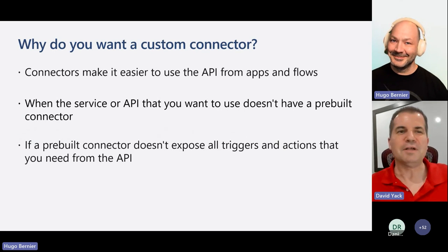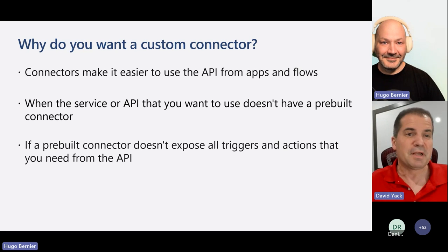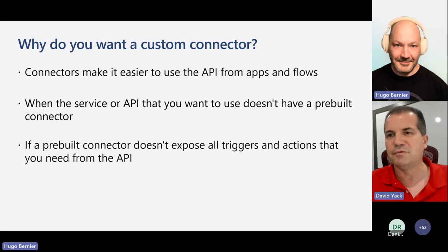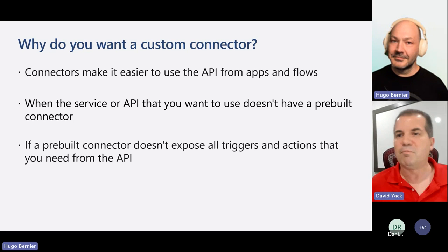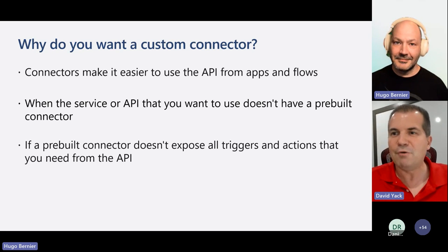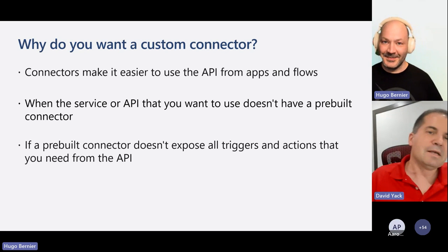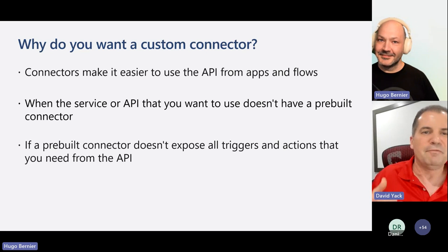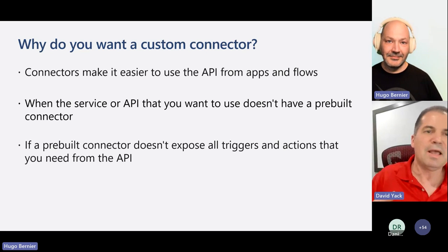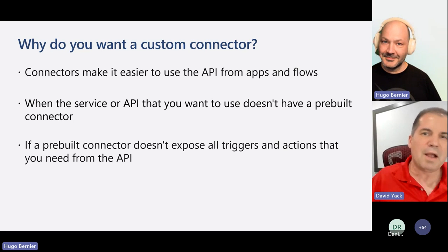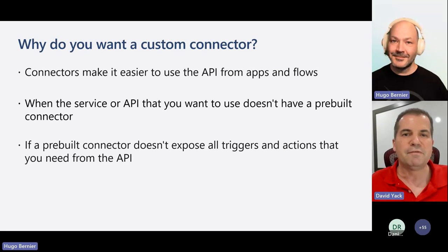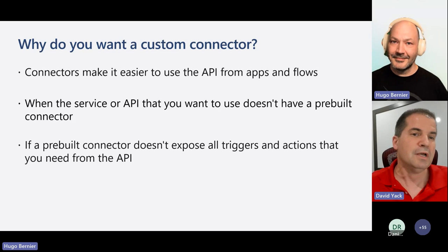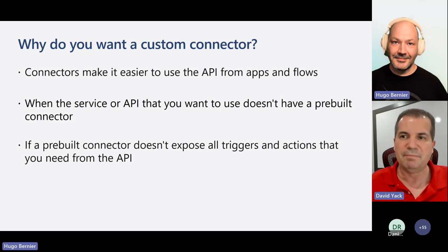The reason you want to build a Custom Connector is because you want to use it with an app or a flow to make it easier and more consistent to use a service or API that you want to integrate with your application. There are a number of pre-built connectors — I think it just topped over a thousand. So the first thing you want to do is go see if there's already a connector. But if there isn't a pre-built connector, then you can go ahead and build a Custom Connector. You also might want to build one if the pre-built connector doesn't have all the actions. For example, when I first wanted to use the Vimeo connector, it didn't have some of the things we needed for working with videos, so we had to build a Custom Connector to extend the operations.